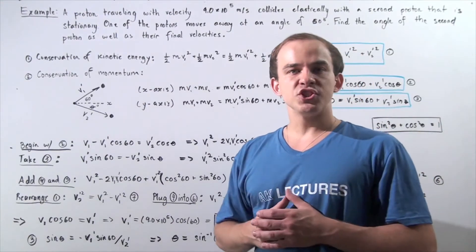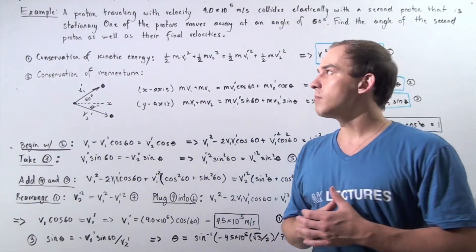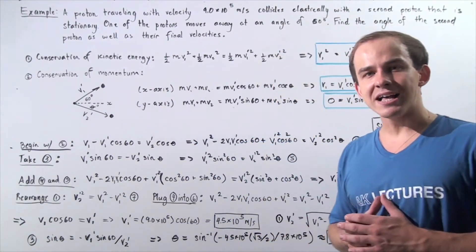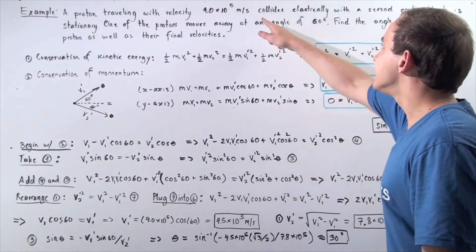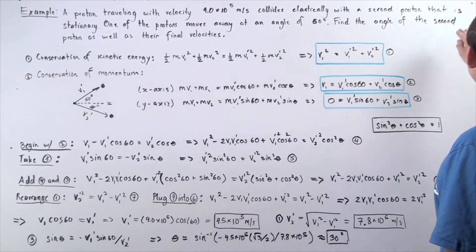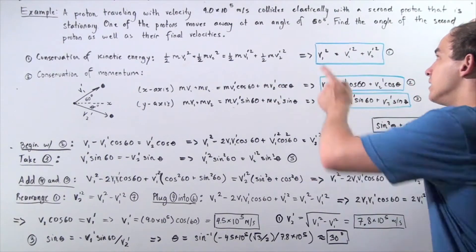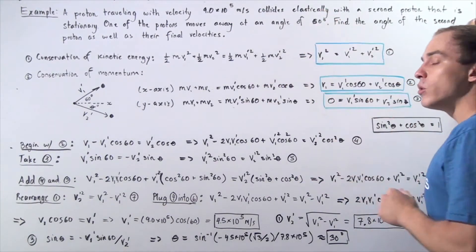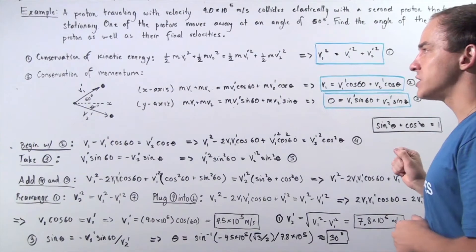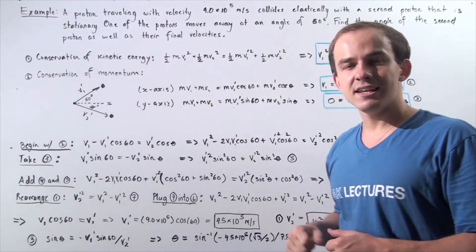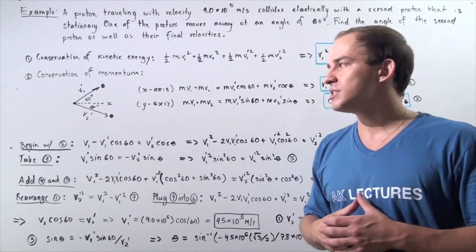In this example, we're going to examine a two-dimensional elastic collision. A proton traveling with velocity 9.0 times 10 to the 5 meters per second collides elastically with a second proton that is stationary. One of the protons moves away at an angle of 60 degrees with respect to the x-axis. We want to find the angle of the second proton as well as the final velocities of the two protons after the elastic collision.